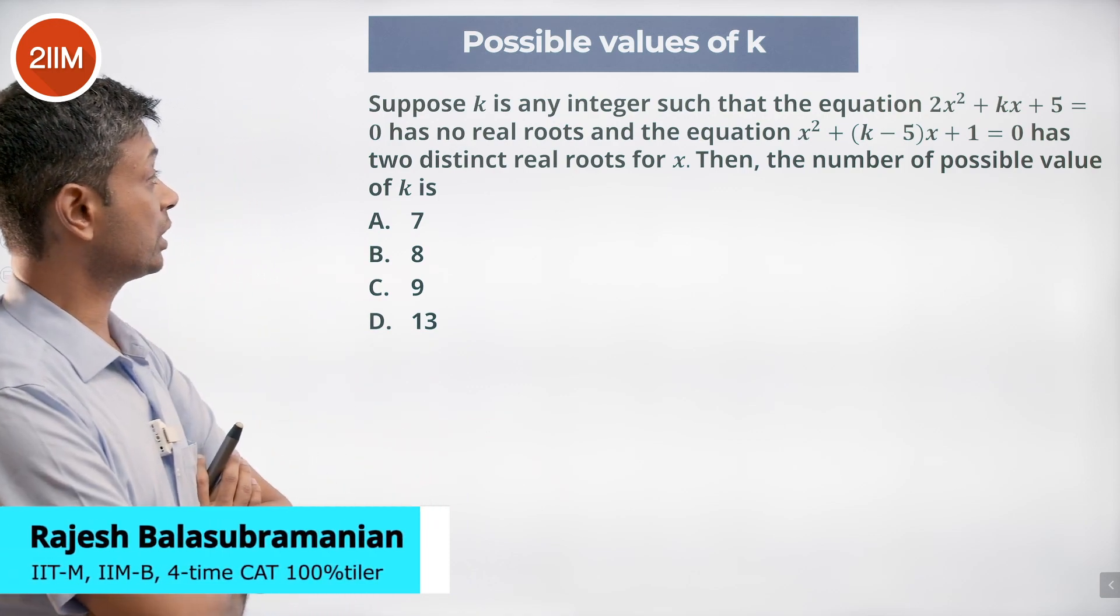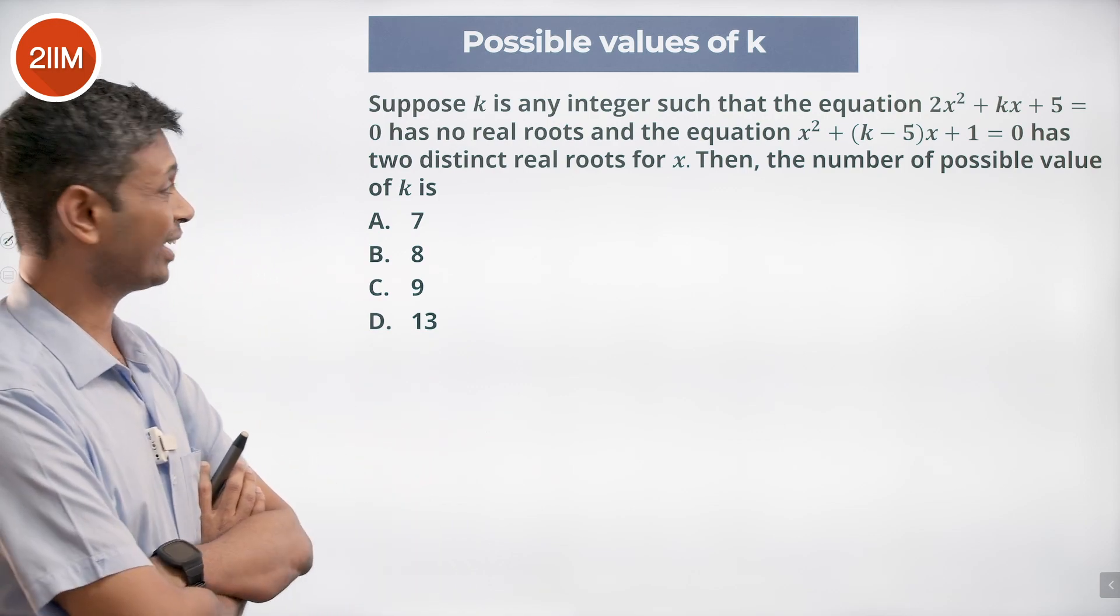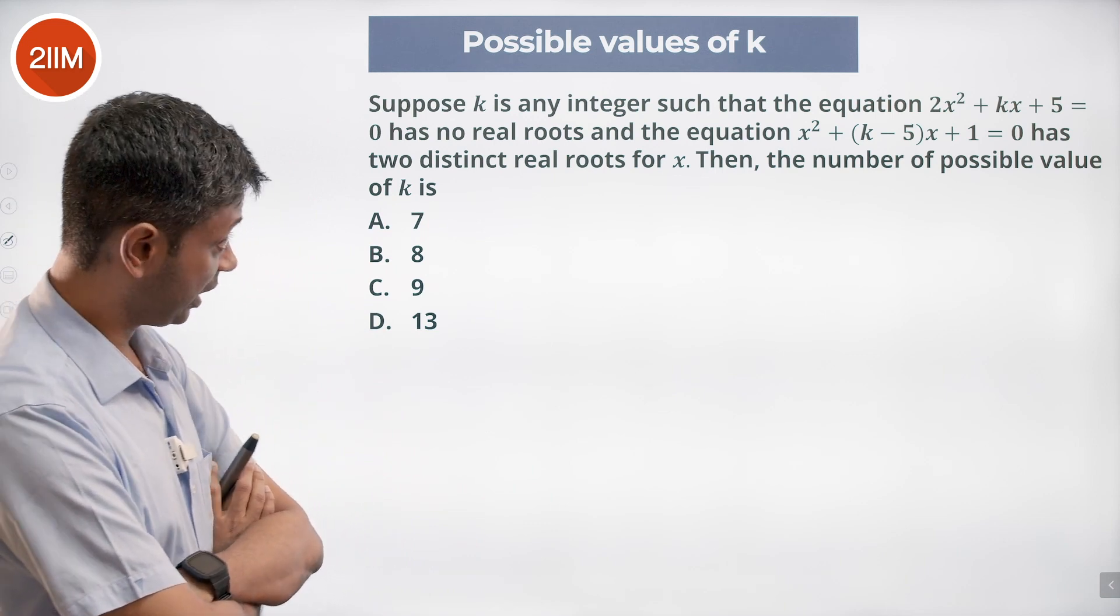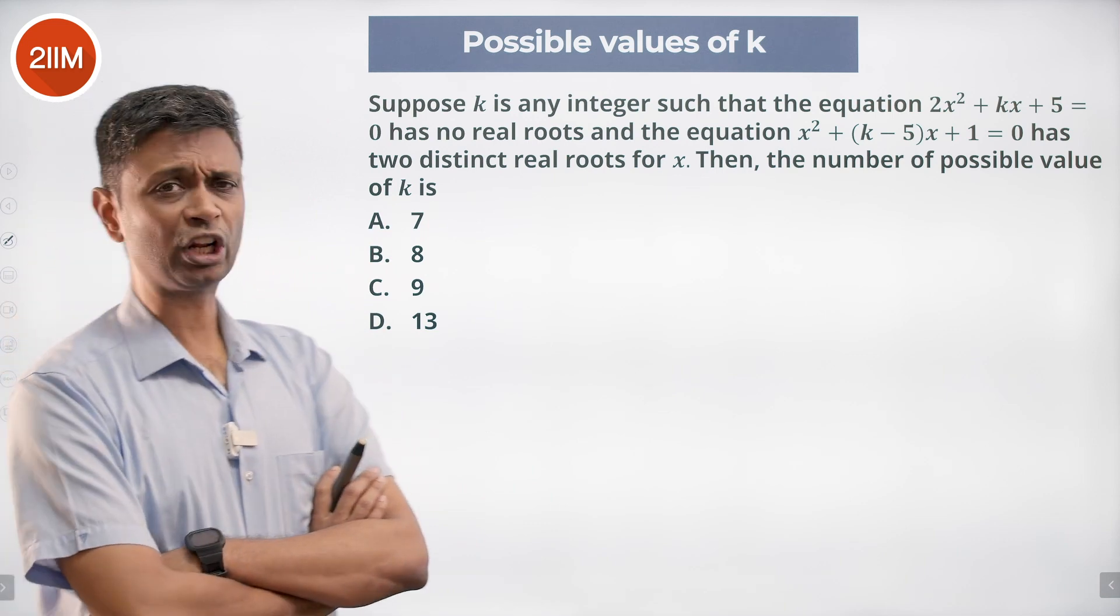Suppose k is any integer such that the equation 2x² + kx + 5 = 0 has no real roots and the equation x² + (k - 5)x + 1 = 0 has two distinct real roots for x.